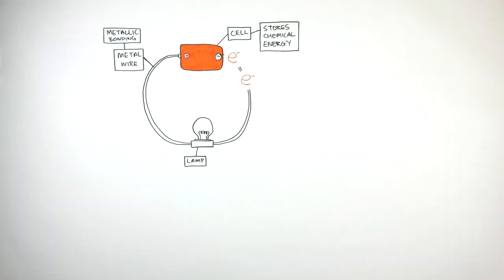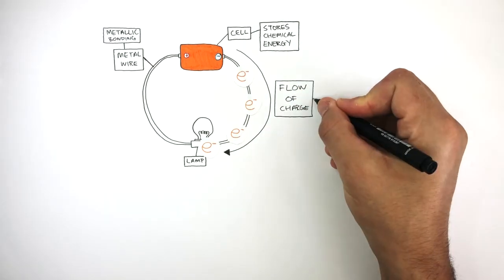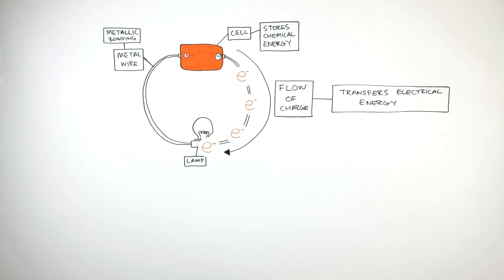The electrons are able to flow through the metal wire as they are repelled by the negative terminal. These moving electrons are called a flow of charge. This flow of charge transfers electrical energy, which was once stored as chemical energy in the cell.